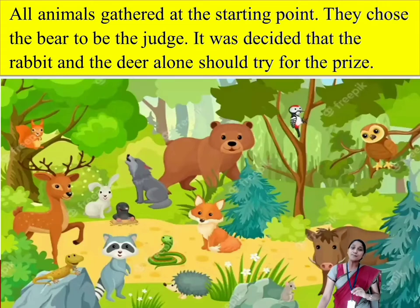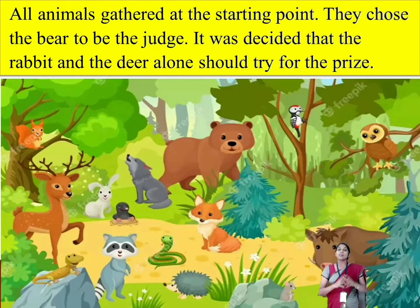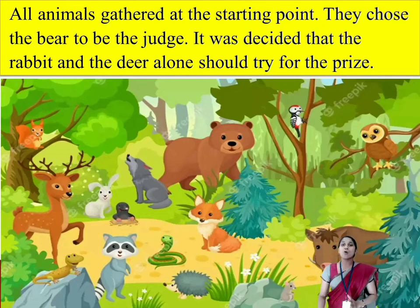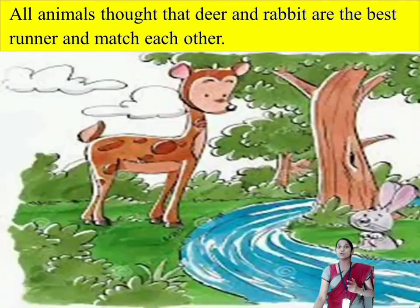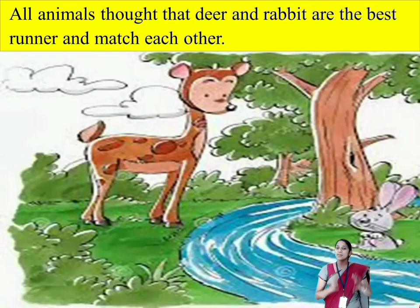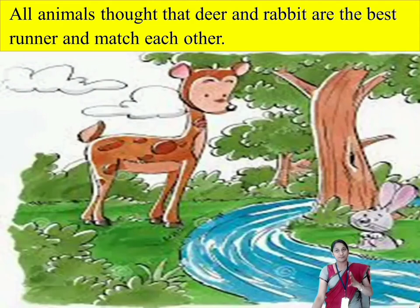Now it was time to start the race. All the animals gathered at the starting point and they chose the bear to be the judge for this competition. It was decided that the rabbit and the deer alone should try for the prize, because the other animals thought that the deer and the rabbit are the best and fastest runners, so they will match with each other.